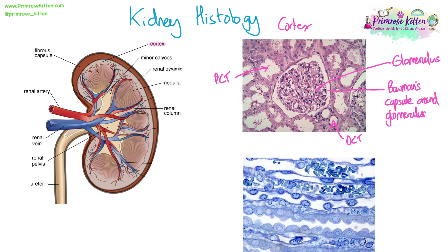In the cross-section you can see tubule structures: we've got the proximal convoluted tubule and the distal convoluted tubule. The proximal convoluted tubule is normally a bit wider in diameter in the lumen than the DCT, which is how we can tell them apart. Also, the brush border may be visible inside the PCT, which you don't have inside the DCT.